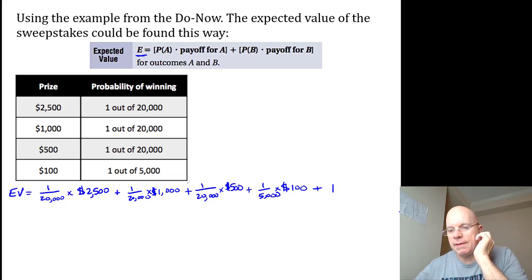The way the problem is worded, in order to enter the sweepstakes you have to send a postcard, and that's going to cost you 34 cents for the postcard stamp. So there's a probability of one that you will lose 34 cents by entering the sweepstakes.